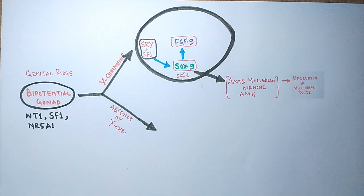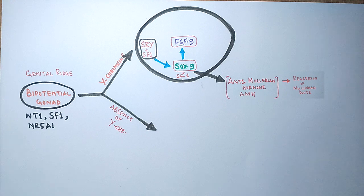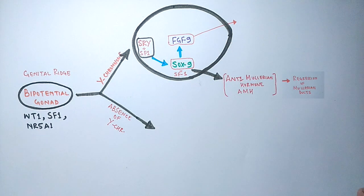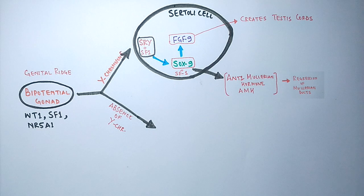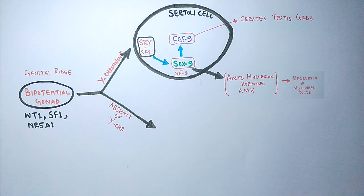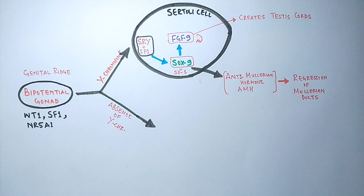FGF9 is a critical factor for sex differentiation: the absence of FGF9 causes sex reversal, where an XY individual develops into a female. FGF9 drives the formation of testes cords and turns sex cords into Sertoli cells. Additionally, FGF9 antagonizes the WNT4 gene — responsible for female differentiation — suppressing it. As a result, all genes that should be activated in females are deactivated in the XY condition, entirely due to the presence of the SRY gene.